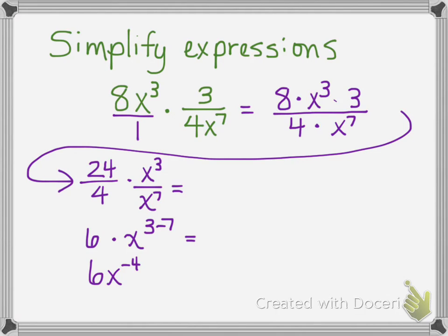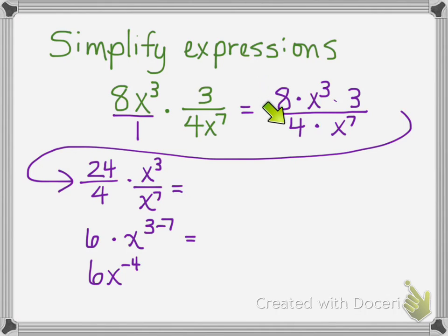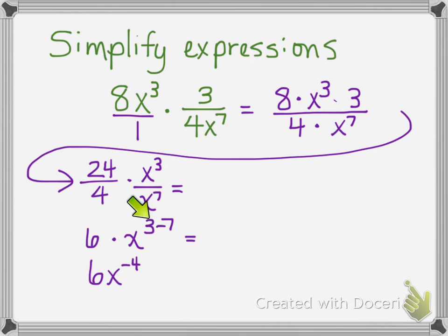After you've done that, here's the numeric part and then the variable part. 24 is 8 times 3, so I put those together and put the x terms together. Then we can simplify these separately: 24 over 4, or 24 divided by 4, is 6. x to the third divided by x to the seventh is x to the 3 minus 7, which becomes 6x to the negative 4 — because 3 minus 7 is negative 4. We could leave it at that with a negative exponent.